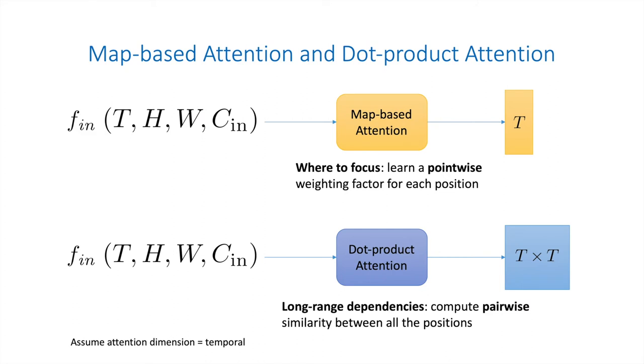For example, let's assume the attention dimension is temporal. Map-based attention will learn T attention weights for the T frames, indicating which frame to focus on. Dot product attention will learn a T by T attention weight matrix based on the pairwise similarity between all the frames. This explicitly models long-range dependencies between the T frames. The learned attention weights will be used to reweight the feature for each frame.